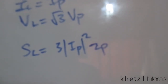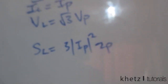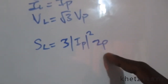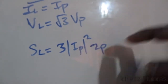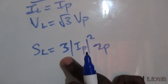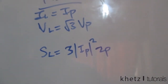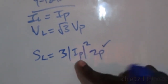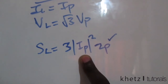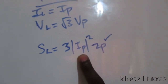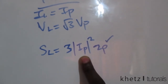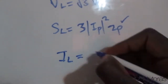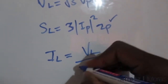Multiplying by three covers all phases of the full load. To find the phase current for load one, we use the formula: I_L equals V_L divided by the square root of three, divided by Z_p, where Z_p is 30 plus j40 ohms as given in the question.